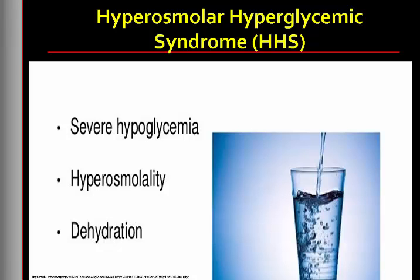HHS is often related to impaired thirst sensation and/or a functional inability to replace fluids. There is usually a history of inadequate fluid intake, increasing mental depression, and polyuria. The main difference between HHS and DKA is that the patient with HHS usually has enough circulating insulin so that ketoacidosis does not occur. Because HHS produces fewer symptoms in the earlier stages, blood glucose levels can climb quite high before the problem is recognized, leading to severe neurological symptoms such as somnolence, coma, seizures, hemiparesis, and aphasia.